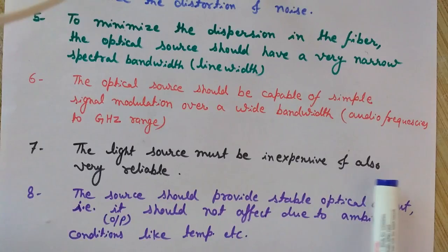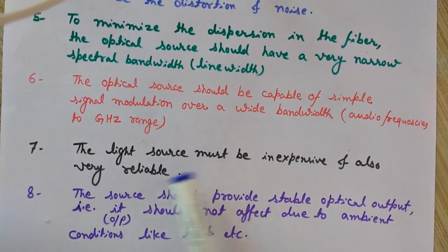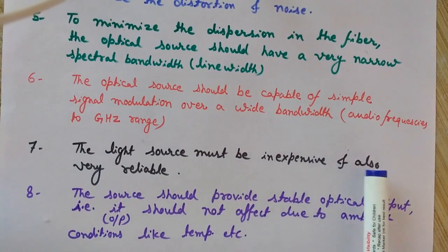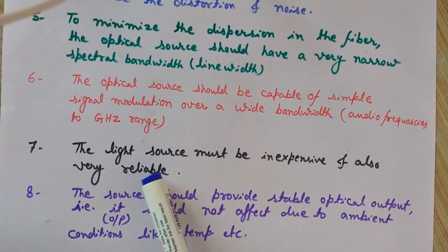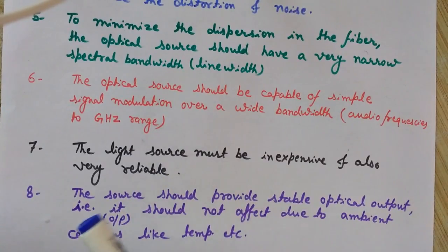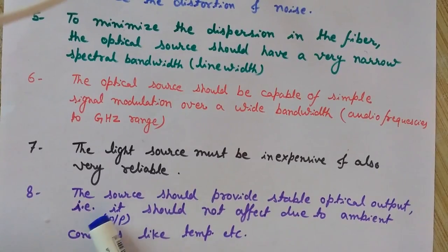The seventh property: the light source must be inexpensive and also very reliable. It should not be costly, and it should be reliable — meaning it should be able to work for a long period of time, for many years.